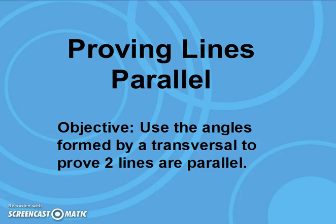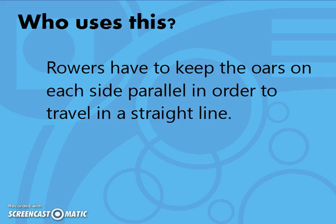Proving lines parallel. Our objective is to use the angles formed by a transversal to prove two lines are parallel. Rowers have to keep the oars on each side parallel in order to travel in a straight line.